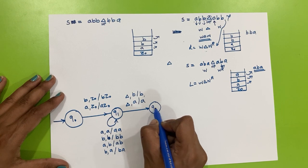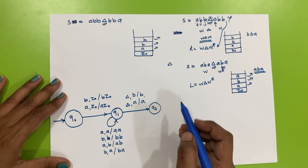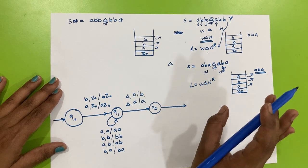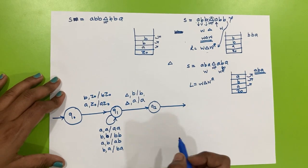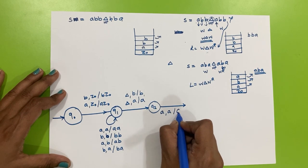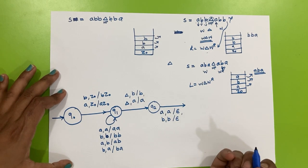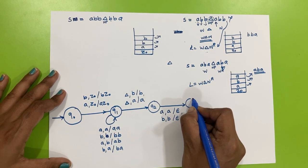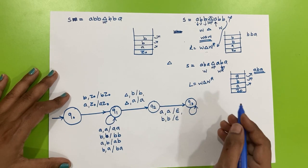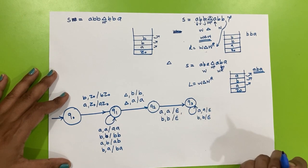When we encounter △, we perform no operation: if input is △ and top of stack is a, keep a on stack; if input is △ and top of stack is b, keep b on stack. After reading △, we move to the pop state. Pop transitions: input a, stack top a → pop (a, a → ε); input b, stack top b → pop (b, b → ε). These transitions repeat for a,a,ε and b,b,ε.